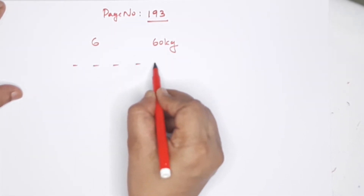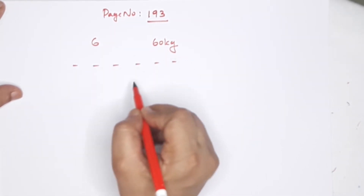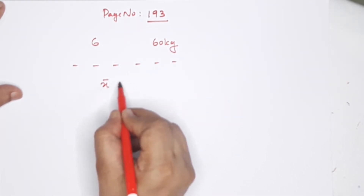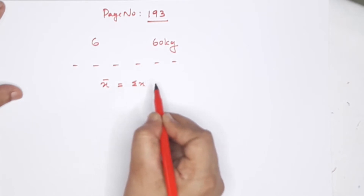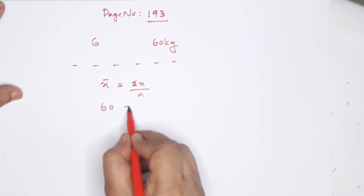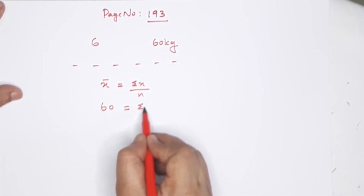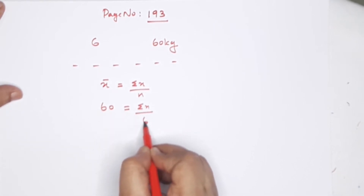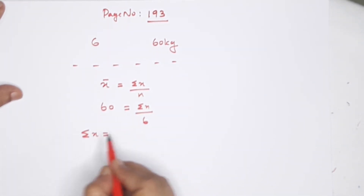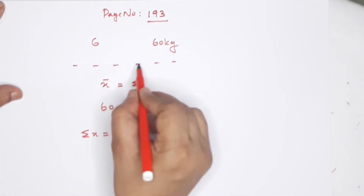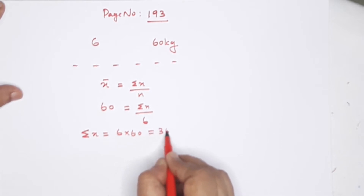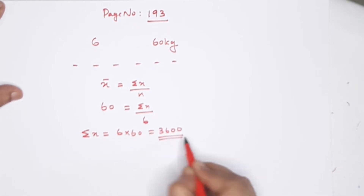Six numbers: 1, 2, 3, 4, 5, 6. The average equals sigma x by n, which is 6 into 60 equals 3,600. These 6 people all have different weights. If the different weights are, say, 61 and 59, then these two people average 60.